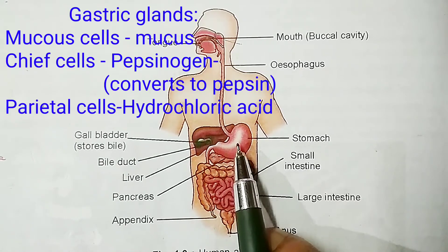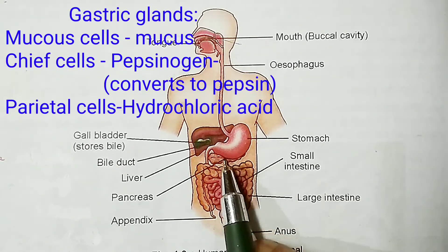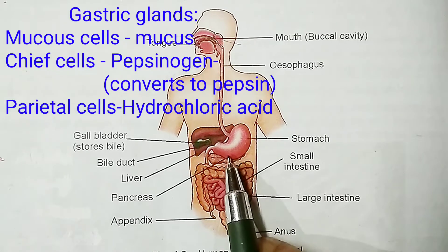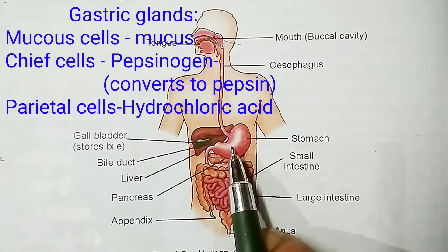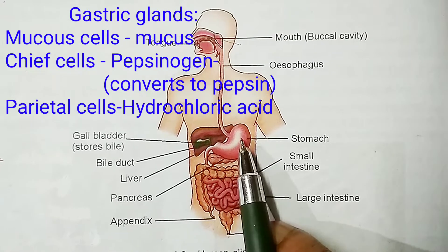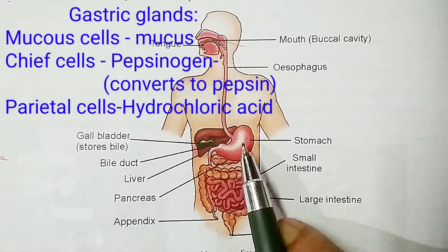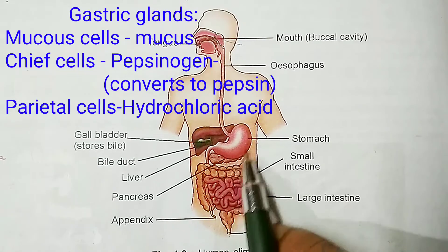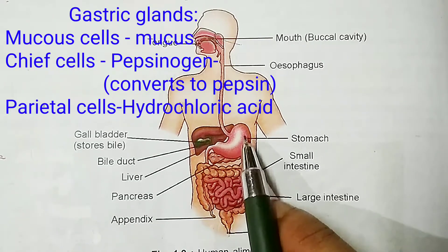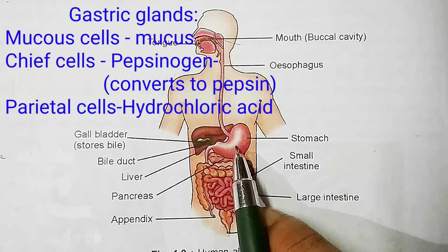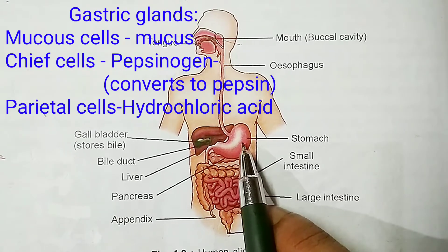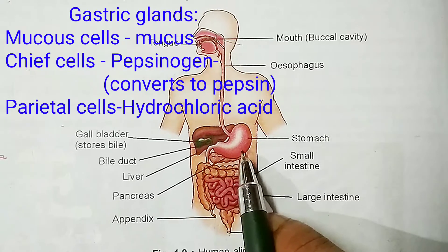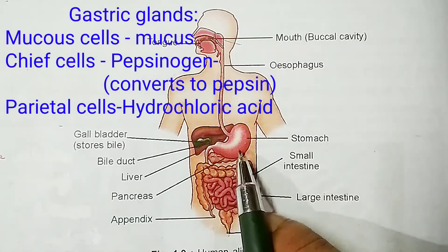Inside the stomach there are gastric glands present on the walls of the stomach. They contain three types of secretory cells. First, mucus cells produce mucus that protects the lining of the stomach from the corrosive action of hydrochloric acid. Second, chief cells release pepsinogen, which when it comes in contact with hydrochloric acid converts to pepsin — and pepsin helps in the digestion of proteins. Third, parietal cells release hydrochloric acid.